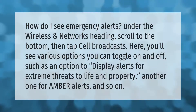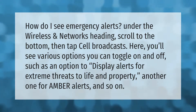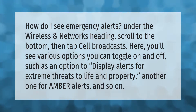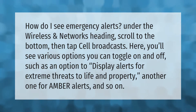How do I see emergency alerts on Android? Under the Wireless and Networks heading, scroll to the bottom then tap Cell Broadcasts. Here you'll see various options you can toggle on and off, such as an option to display alerts for extreme threats to life and property, another one for Amber Alerts, and so on.